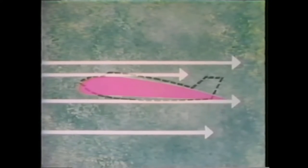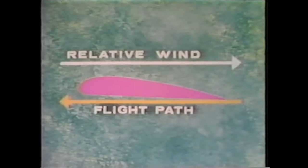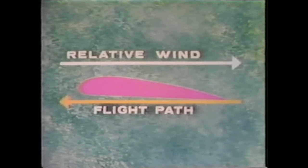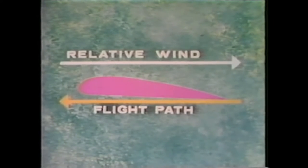The airflow striking the fixed wing airfoil of an aircraft, or the aircraft itself, is called the relative wind. The direction of the relative wind is always opposite to and parallel with the flight path of the airplane. In level flight, therefore, the relative wind and the flight path are horizontal and parallel.